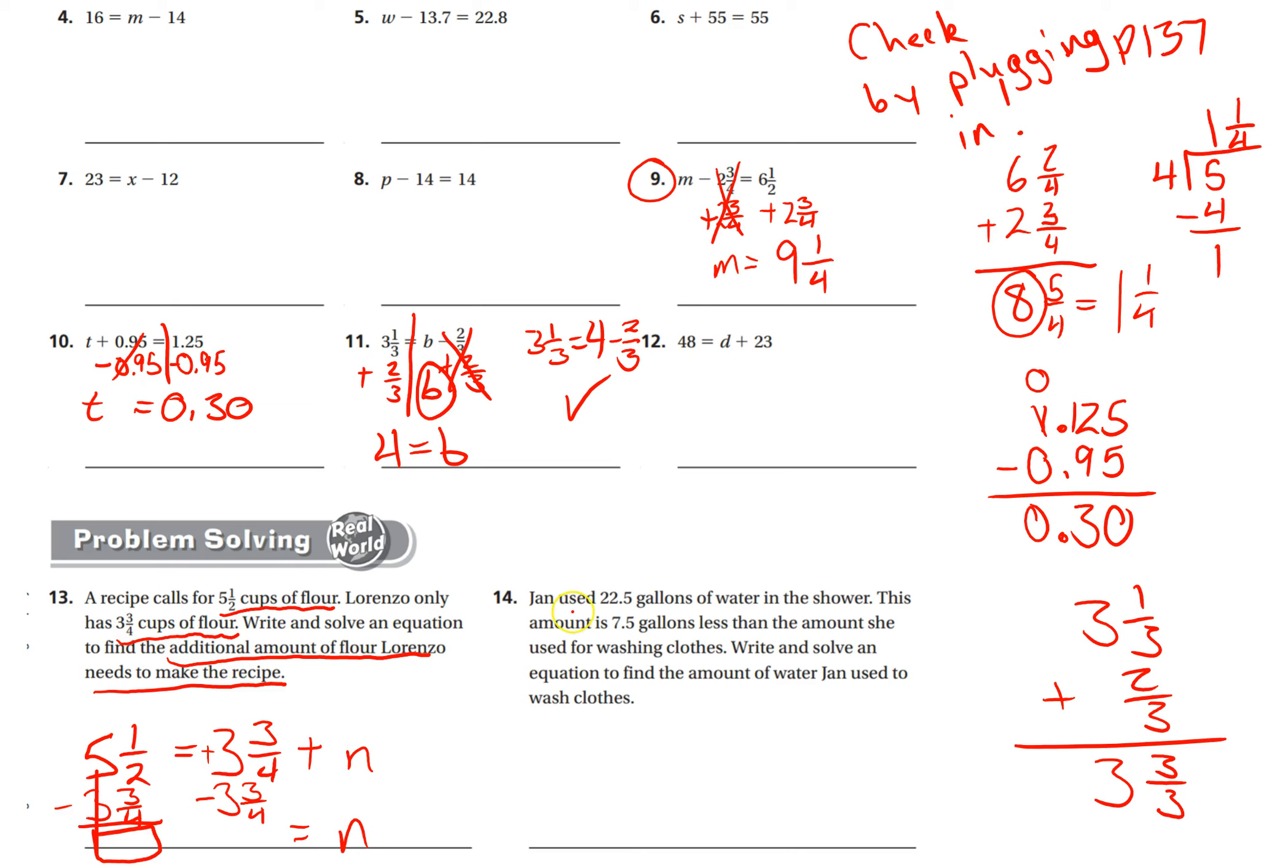Okay, number fourteen. Jan used 22.5 gallons of water in the shower. This amount is 7.5 gallons less than the amount she used for washing clothes. Write and solve an equation to find the amount of water Jan used to wash clothes. Okay, so we don't know how much she used to wash clothes. I'll put a w for wash clothes. Okay, whatever she used to wash clothes, though, if we take 7.5 away from that, that tells us how much she used in the shower, which was 22.5.